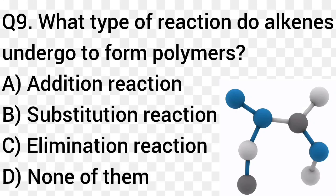Question number 9. What type of reaction do alkanes undergo to form polymers? Option A: Addition reaction. Option B: Substitution reaction. Option C: Elimination reaction. Option D: None of them. The right answer is option A, addition reaction — specifically polymerization.